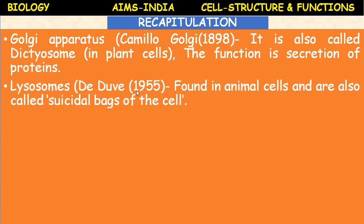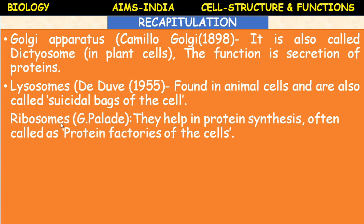Lysosomes were discovered by de Duve in 1955. They are fluid-filled bag-like structures found in animal cells only and are also called suicidal bags of the cell. Ribosomes were discovered by Palade. Ribosomes help in protein synthesis and are often called protein factories of the cells.